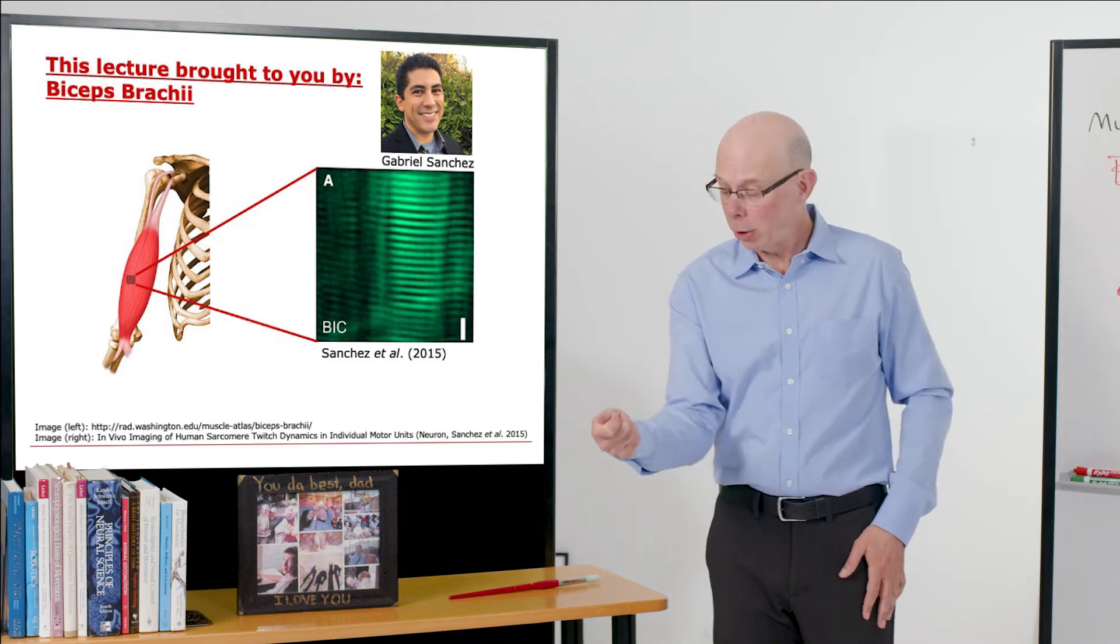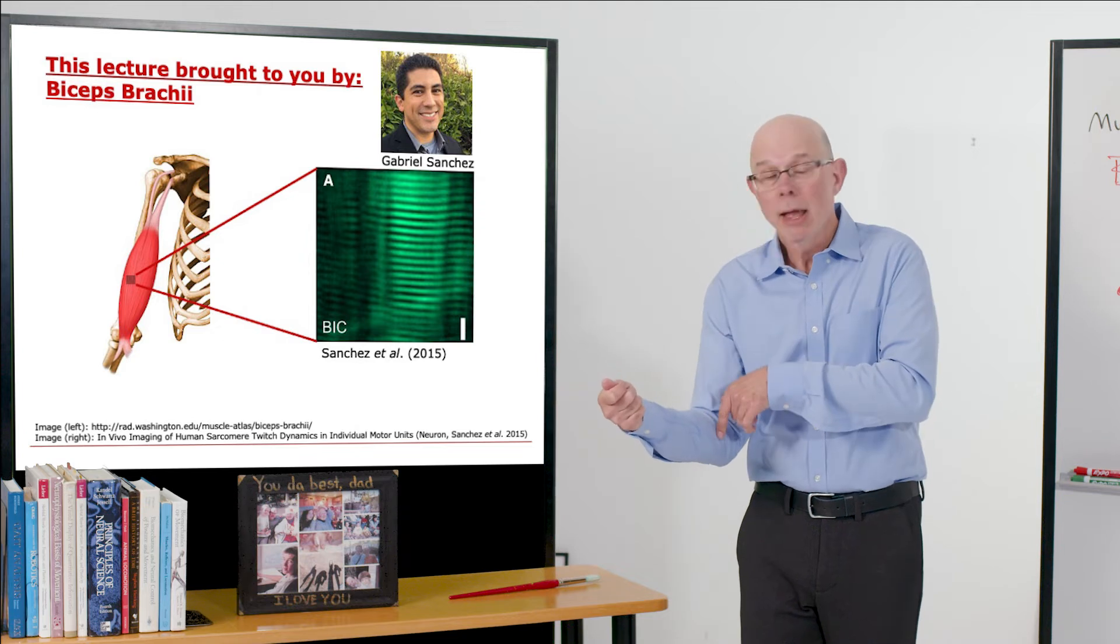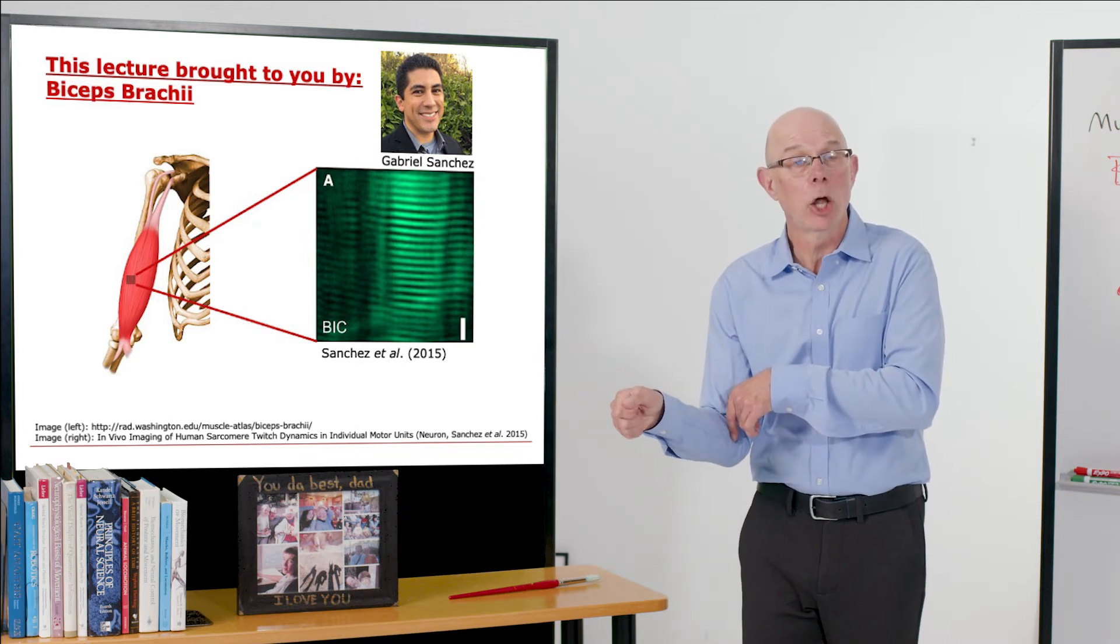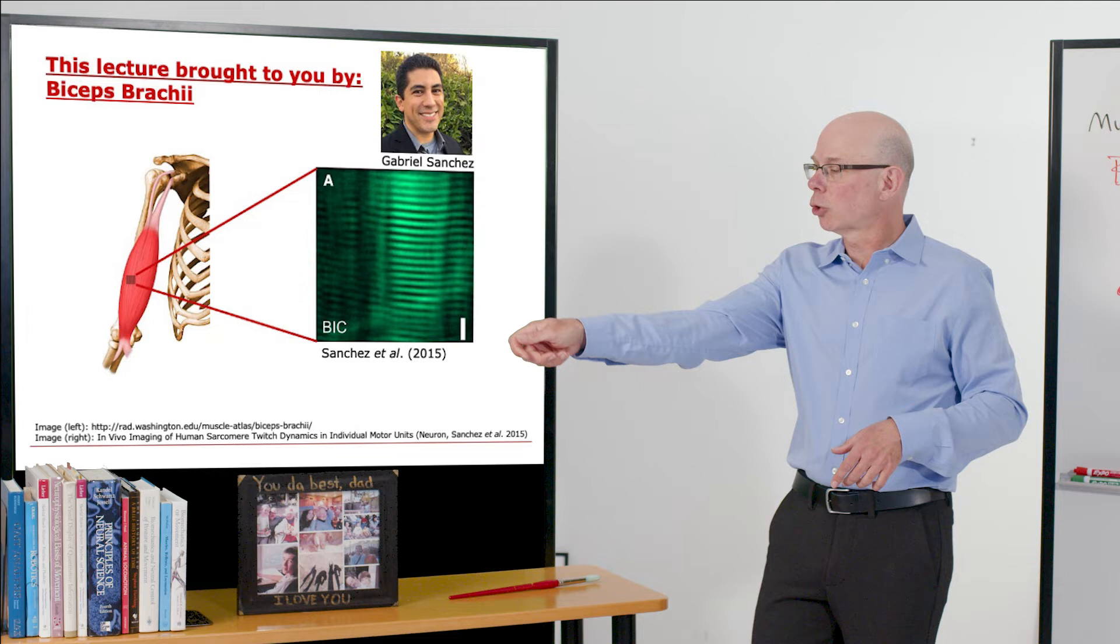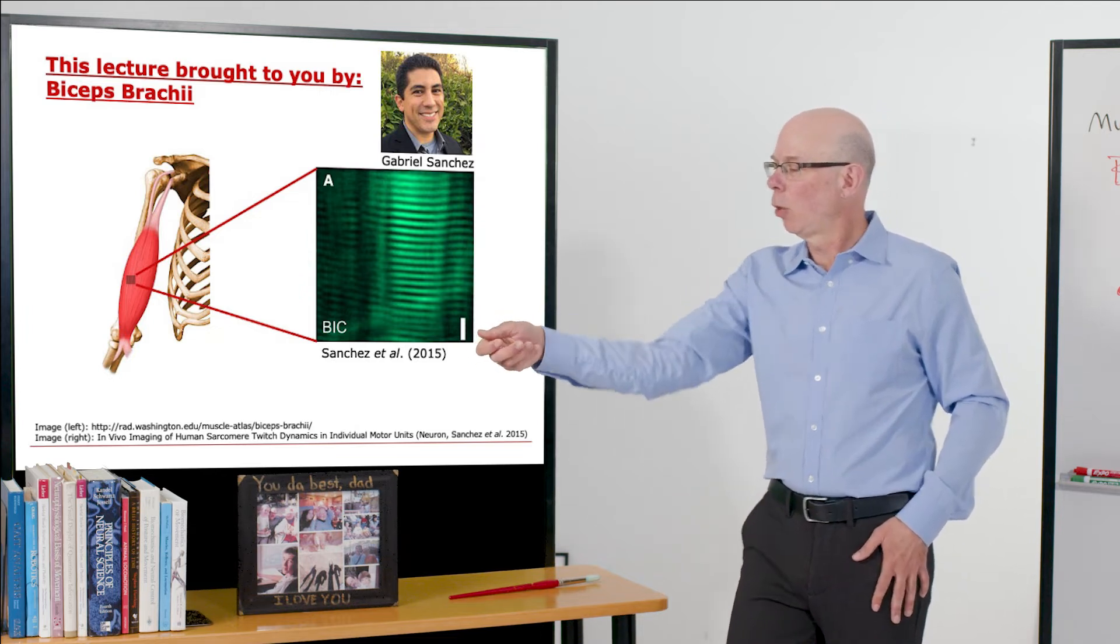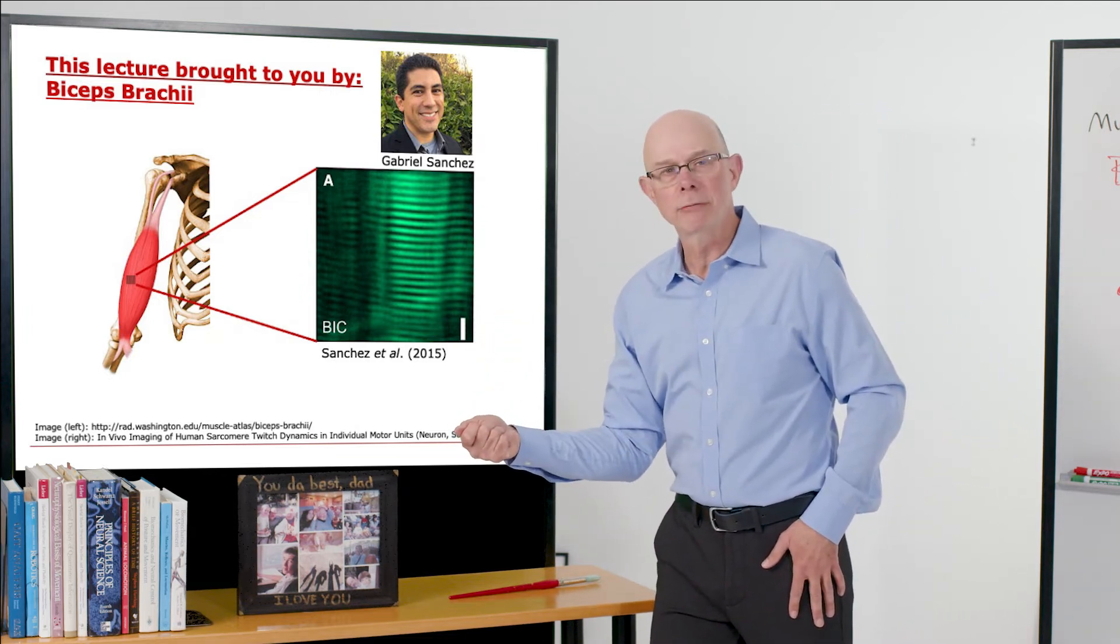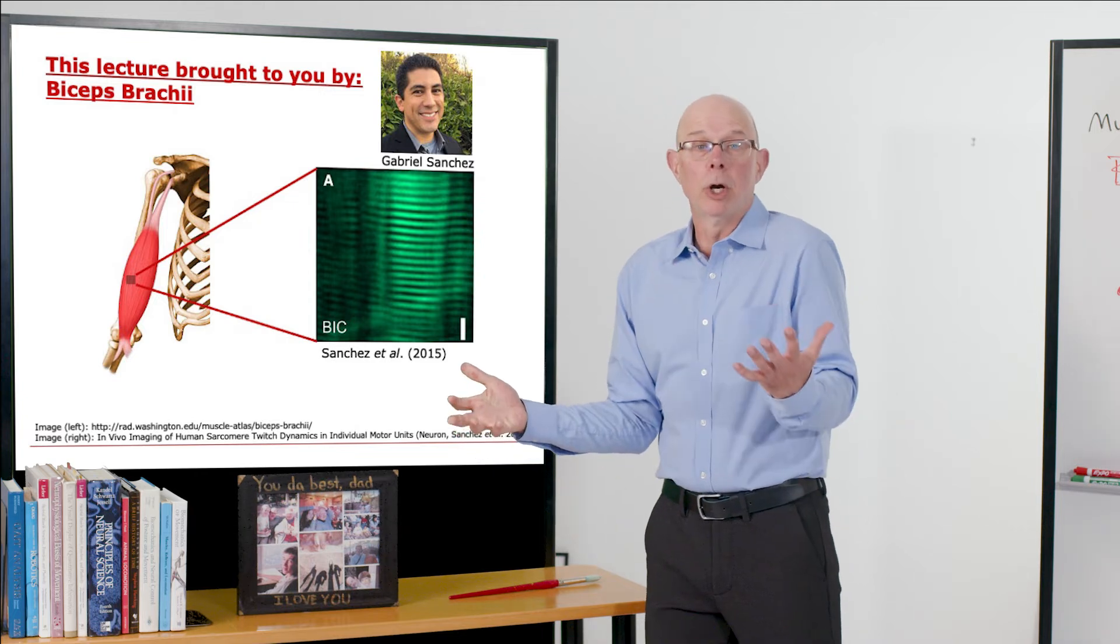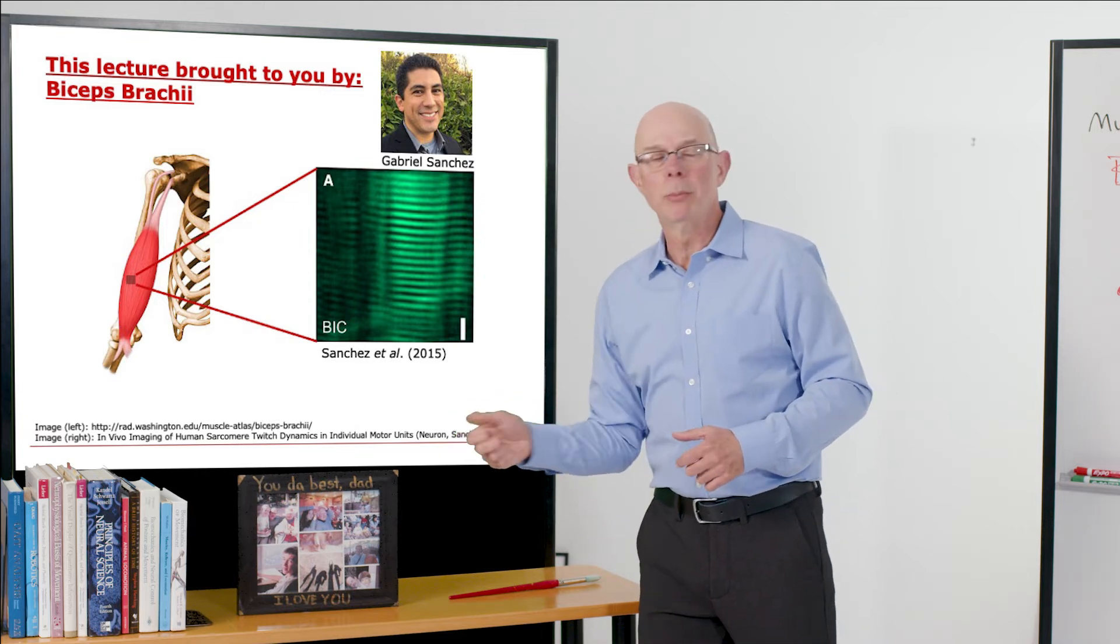Its moment arm gets bigger as you flex your elbow. Its supination moment arm enlarges. That's why we don't screw in screws with our elbow extended. We usually bend a little bit intuitively. Our brain knows what the moment arms are so that we can screw in more powerfully.